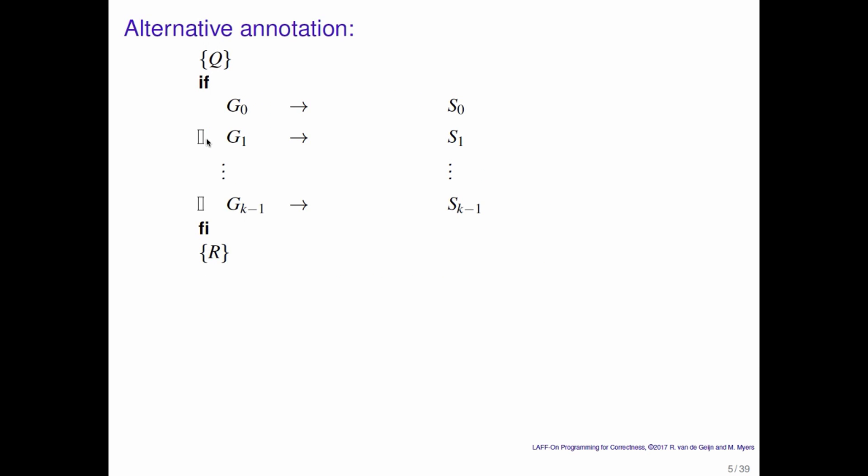What we're going to do is we're going to annotate our if command differently. It's still the case that after any guarded statement or command is executed, R must be true. But now we're going to say, look, if Q is true before the if command, and if we know that G0 is true,